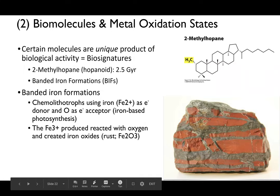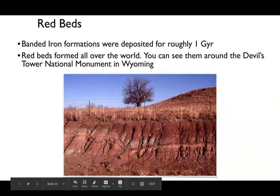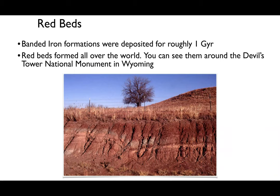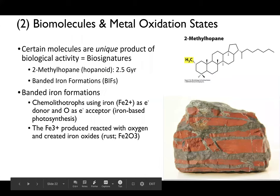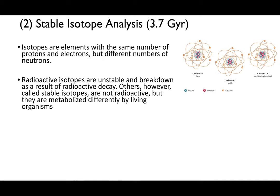Next, we can look at stable isotope analysis. Isotopes are elements with the same number of protons and electrons but different numbers of neutrons. Carbon-12 has six protons and six neutrons; carbon-13 and carbon-14 are isotopes with extra neutrons. Carbon-13 is slightly heavier than carbon-12, and organisms doing photosynthesis prefer carbon-12 over carbon-13 because it requires less energy.